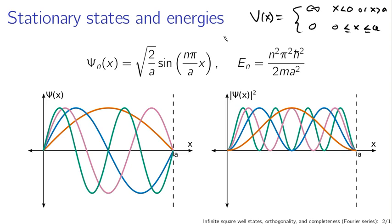The energies associated with these wave functions — this energy is the separation constant in the conversion from the time-dependent to the time-independent Schrödinger equation — are proportional to n, that index. The wave functions themselves look like sine functions and have an integer number of half wavelengths, or half cycles, between 0 and a. The orange curve is n equals 1, the blue curve is n equals 2, the purple curve is n equals 3, and the green curve is n equals 4. The squared magnitudes show one hump for n=1, two humps for n=2, three humps for n=3, and four humps for n=4.